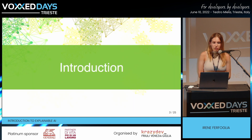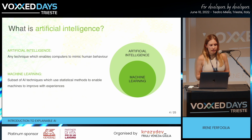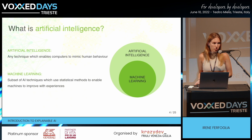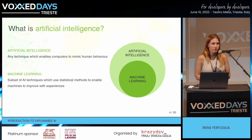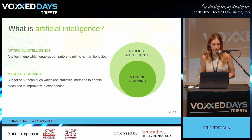Let's first have a look at what is the problem we're trying to solve. What is this artificial intelligence we're trying to make explainable? The quick answer is any technique that enables computers or robots controlled by computers to mimic human behavior. Through AI, a system uses math and logic to simulate the reasoning that people use to learn new information and make decisions. A subset of artificial intelligence is machine learning, which is composed by all those techniques that use statistic methods to enable machines to improve on their own with experience. Throughout my presentation, I will use the two terms almost interchangeably.